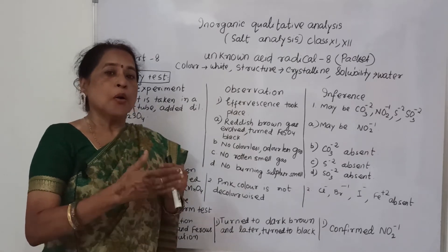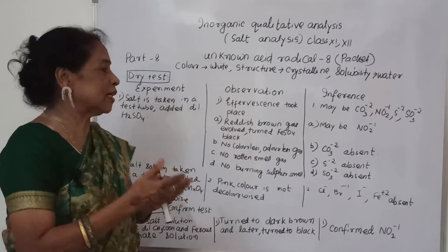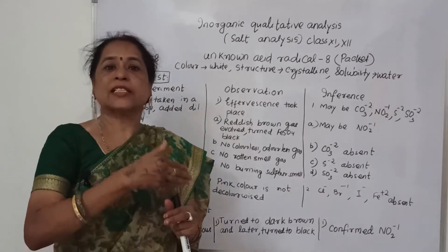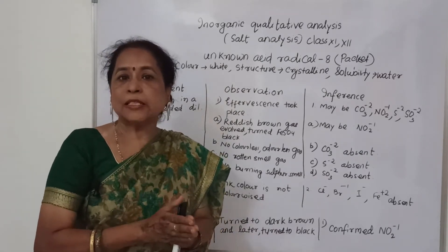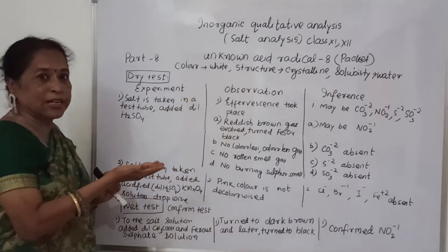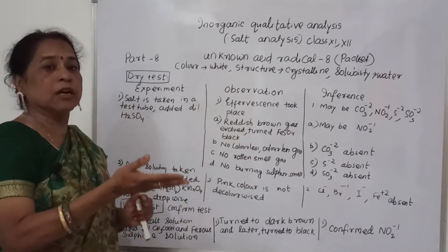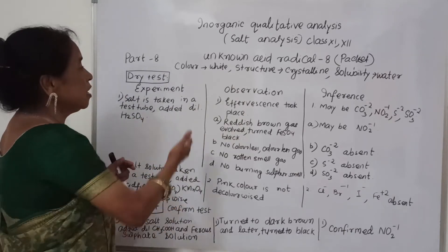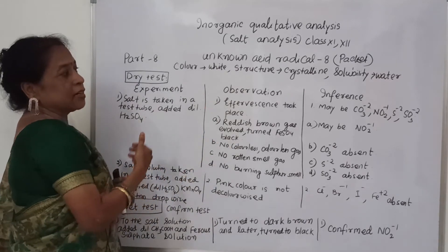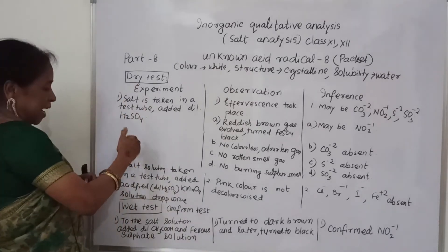First I will determine the possible acid radical by the dry test, and by the confirmed wet test I will confirm what is my acid radical. Since the salt is given to me as packet number 8, I should check the color, structure, and solubility. The color is white, structure is crystalline, and it is soluble in water.